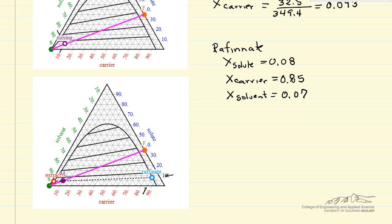Well, I can do the same thing for the extract, trying to read off the value here. You can see it's mostly solvent, so these are reasonable estimates for reading off the graph.